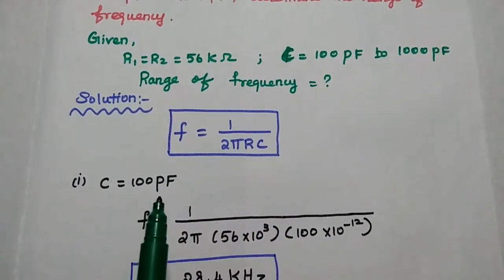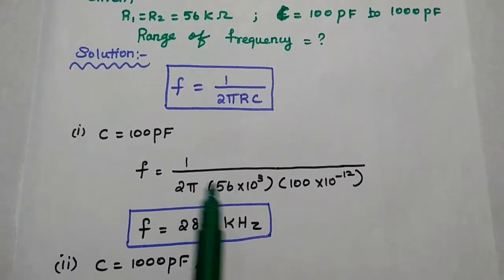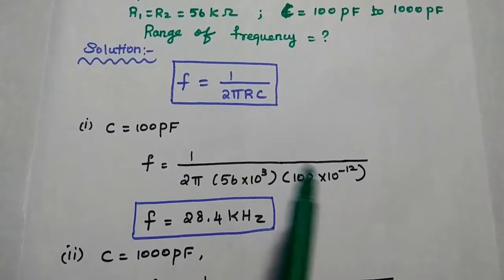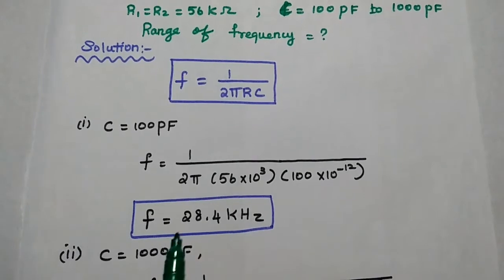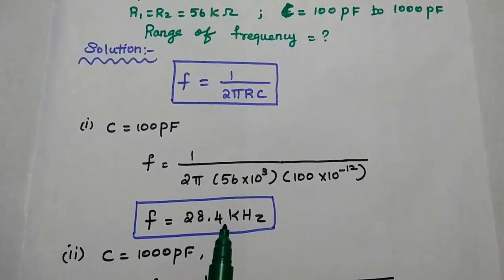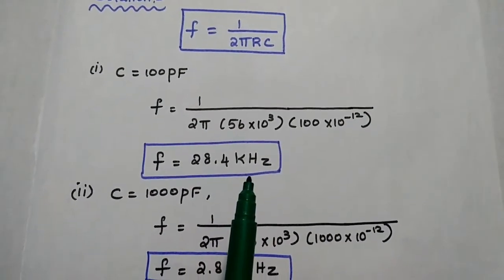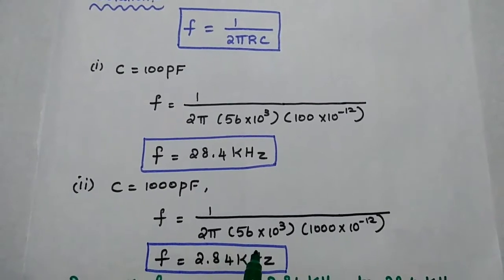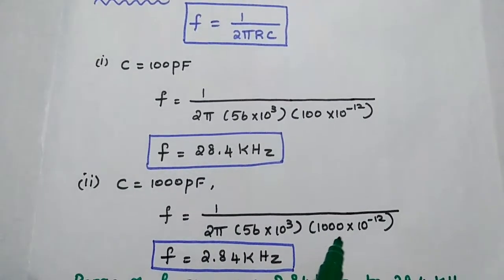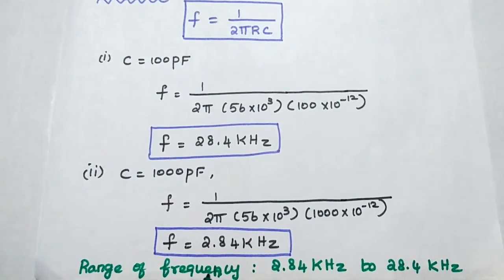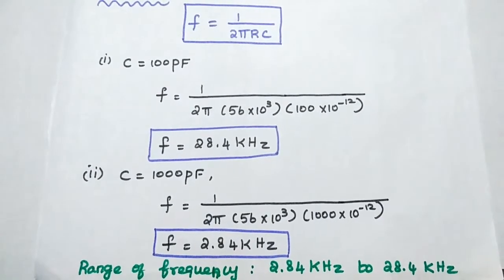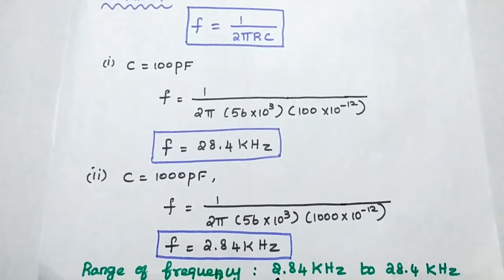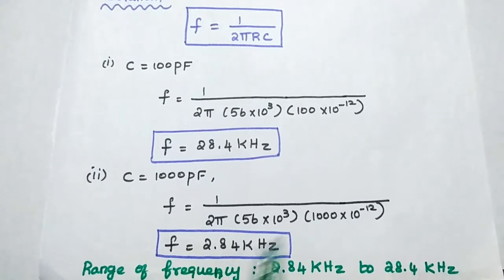First, consider C equals 100 picofarad: f equals 1 by 2 pi times 56 times 10 to the power 3 times 100 times 10 to the power minus 12, giving f equals 28.4 kilohertz. Similarly, for C equals 1000 picofarad: f equals 1 by 2 pi times 56 times 10 to the power 3 times 1000 times 10 to the power minus 12, giving f equals 2.84 kilohertz. So the range of frequency is 2.84 kilohertz to 28.4 kilohertz.